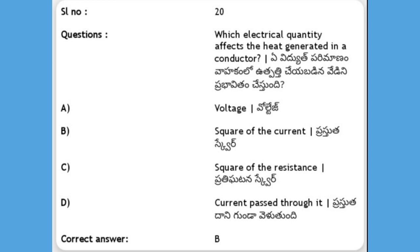Next question: the heat produced in a conductor is proportional to which of the following? Options: A) voltage, B) square of the current, C) square of the resistance, D) current passed through it. The answer is the square of the current. The heat produced formula is H = I²RT, so it depends on the square of the current.